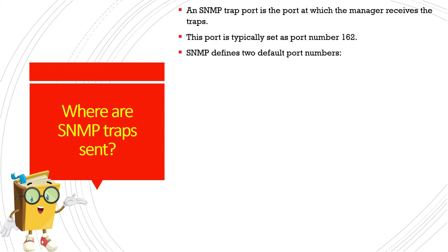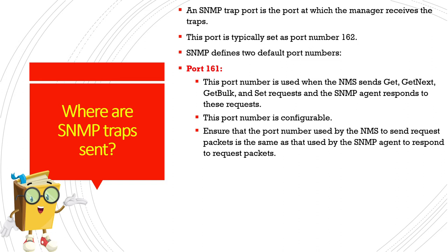A port must be configured on devices where the manager can receive traps. Typically this is port 162, used by default. Broadly, SNMP uses two port numbers. Port 161 is used when the NMS needs to send Get, Get Next, Get Bulk, or other SNMP requests to the agent. The manager sends its requests to agent devices on port 161, which is configurable.